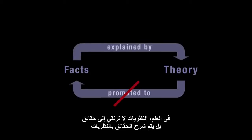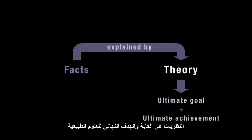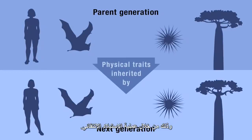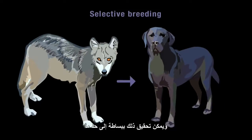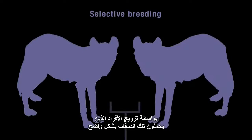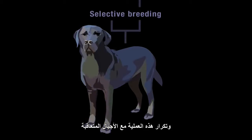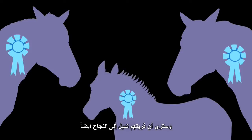Facts are explained by theories. Because of their explanatory power, theories are the ultimate goal and the ultimate achievement in the sciences of nature. To start with some well-known facts: we know that physical traits of parent lifeforms are inherited by the next generation, and that through the artificial process of selective breeding many traits can be exaggerated in later generations. This can be achieved fairly simply by mating together individuals that exhibit those traits most strongly and repeating this process with successive generations.